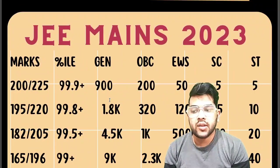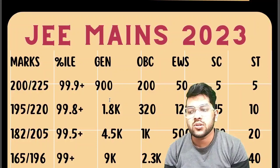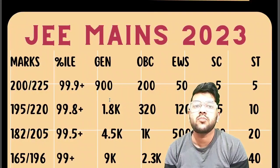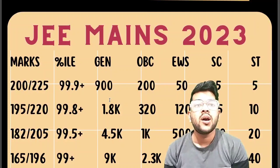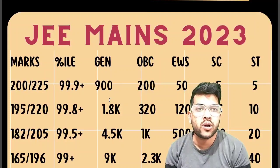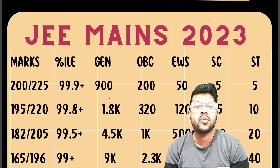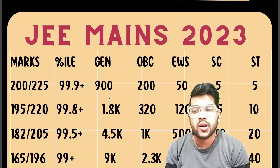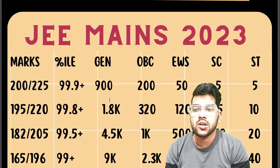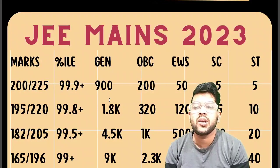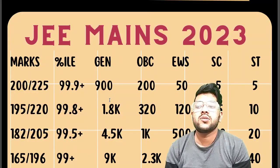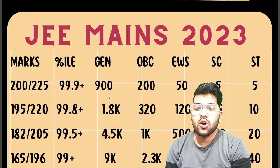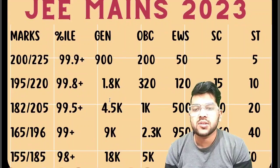For 99+ percentile, marks would be 165 for the first attempt and 196 for the second attempt. Again, these are for a moderate paper — if the paper is easy or hard, marks will change accordingly. The corresponding ranks are: General 9,000, OBC 2,300, EWS 950, SC 160, ST 40.